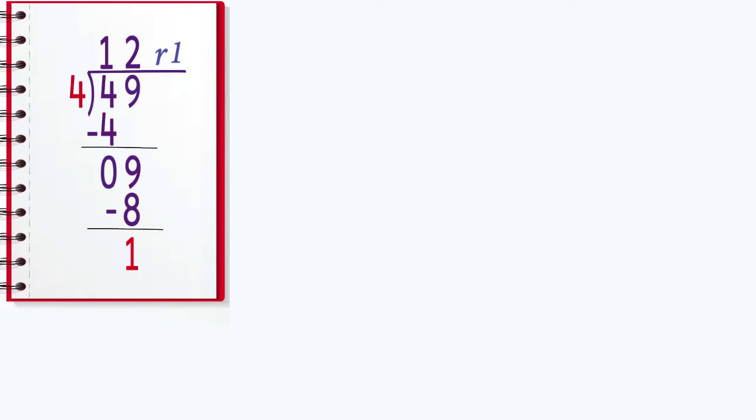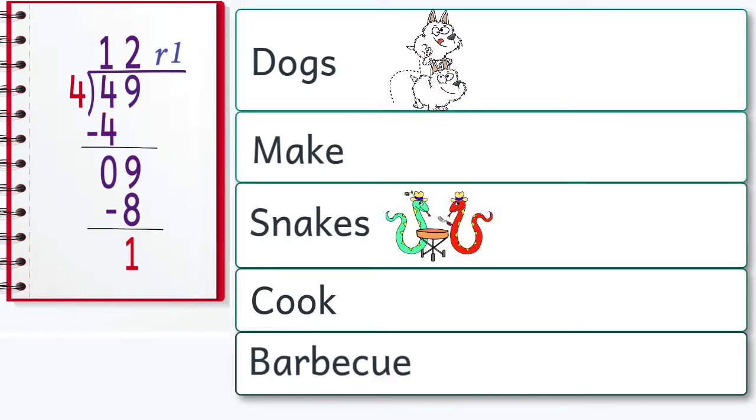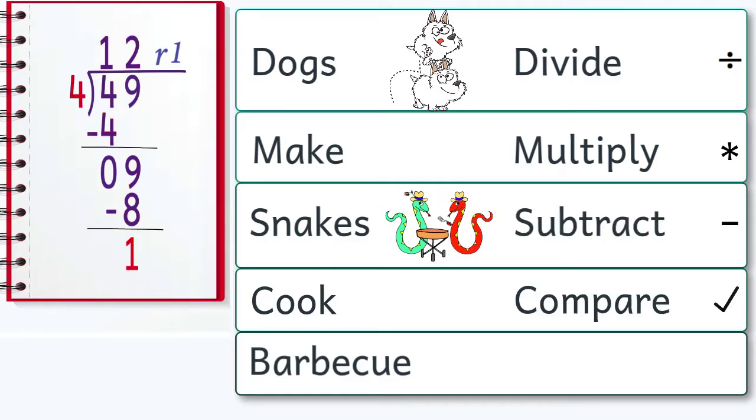To remember the order of the steps when dividing, one of my students made up this phrase: dogs make snakes cook barbecue, or divide, multiply, subtract, compare, bring down.